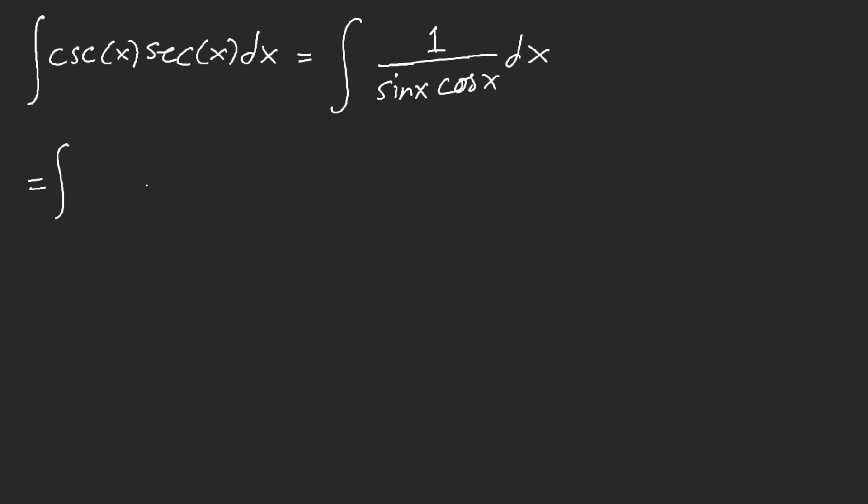We're going to let 1 equal sine squared plus cosine squared. Look at that. Now, what do you notice? This is now simply equal to tan of x plus cotangent of x.